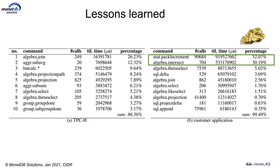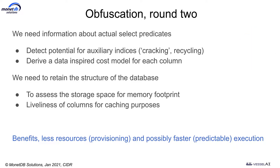So obfuscation so far was very rough — everything was masked out. Fully masking out the relation or the columns is one step too far. We need at least some indication of what tables are being used to assess the storage footprint, or how columns are being used within the database system.